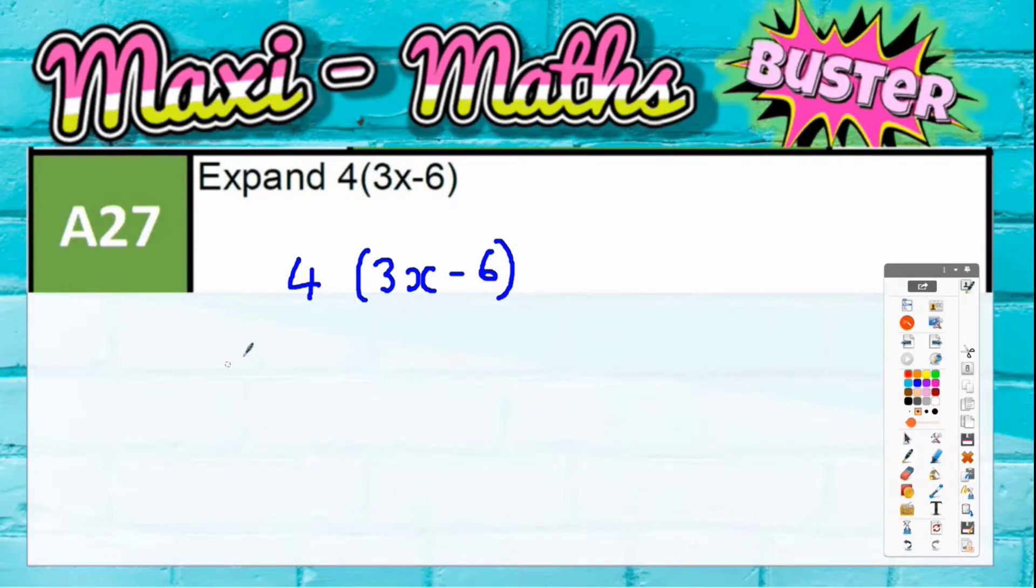Expand the bracket: four lots of 3x minus 6. When you expand the bracket, another way of calling that is multiplying out the bracket. What we've got to remember is that there's an invisible times sign between the bracket and whatever's in front of it, so it means the whole bracket times by four.